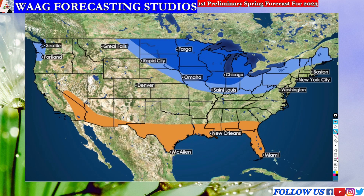Moving into our final temperature region, focused on the north central United States — from Montana down to Illinois and around the Great Lakes — much of the northern United States is typical with an ENSO neutral pattern. We are expecting colder conditions for most of these areas. You will get warm fronts and warm air advection from the Gulf of Mexico on some days, but generally most days will be colder this spring until we move into the summer months.